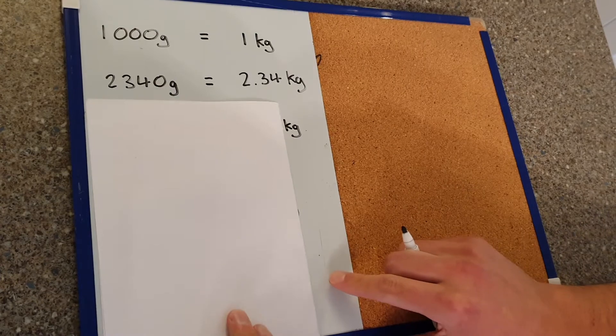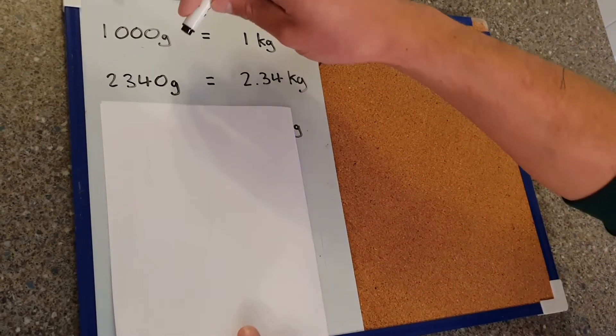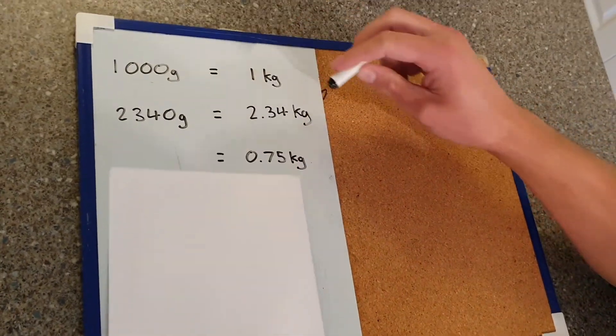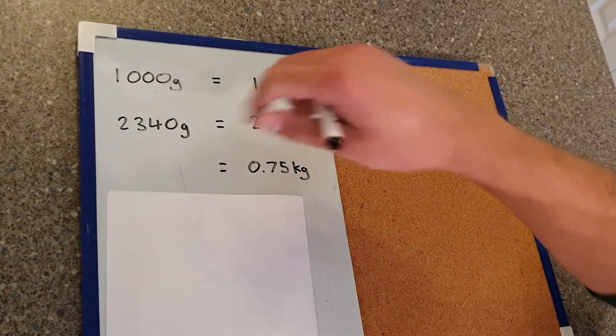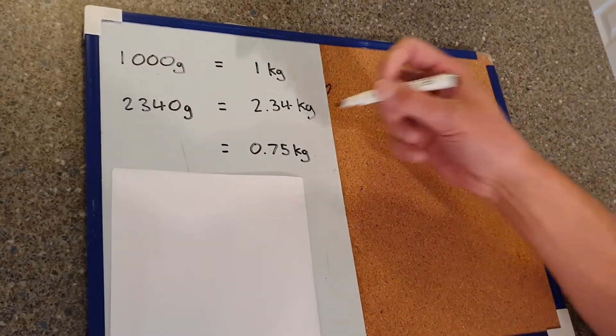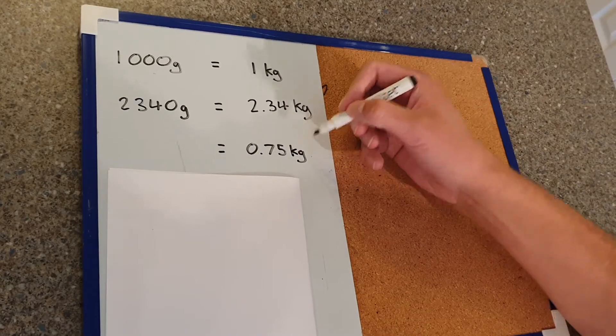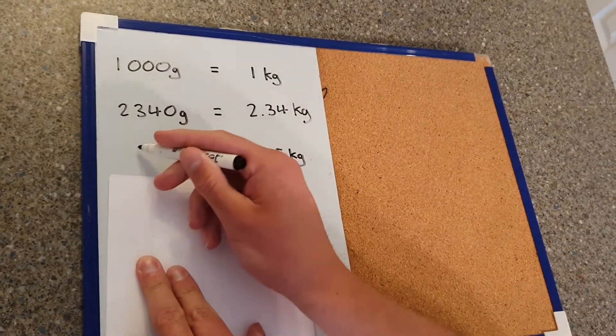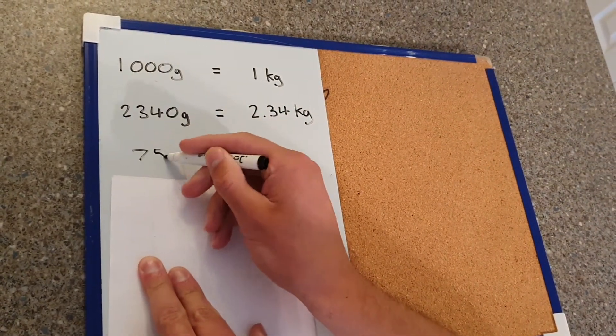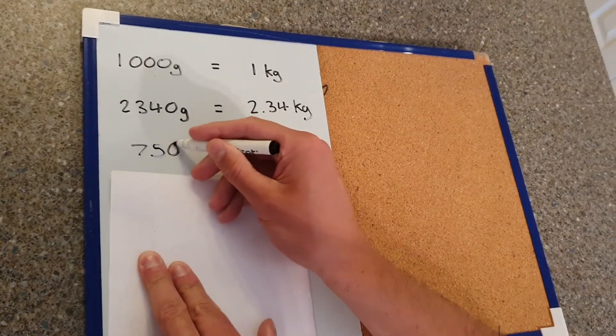Now if we're working the other way, we do the opposite. So here I divided by a thousand to change it. If I've got something in kilograms, I need to now times it by a thousand, so 0.75 kilograms would be 750 grams.